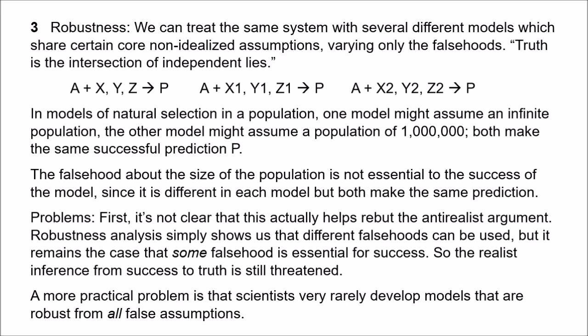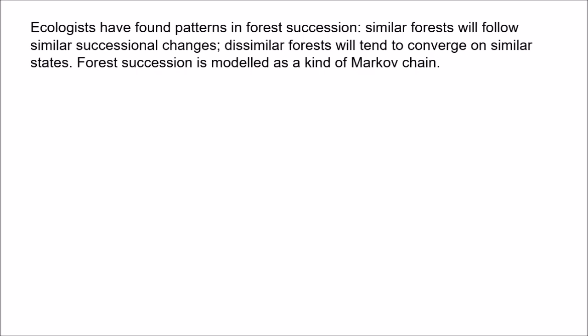To illustrate this, Jay Odenboe in 'True Lies' considers the example of models of ecological succession. Succession occurs when the populations in an ecosystem replace each other over time. Interestingly, there are patterns in successions: if you focus on, say, forests, you'll find that similar forests will follow similar successional changes, and dissimilar forests will often converge on similar states. This kind of convergence is found in a class of statistical processes known as Markov chains. In a Markov chain, the probability of transition from one state to another depends only on the current state, not on any previous state. Markov chains can settle into a characteristic pattern even when they have different starting conditions, just like is seen in the forests. So ecologists started to model forest succession as a kind of Markov chain.